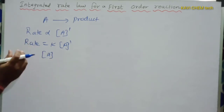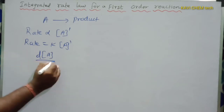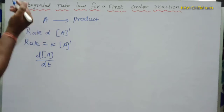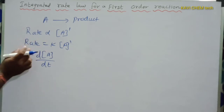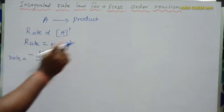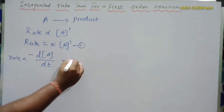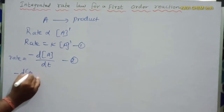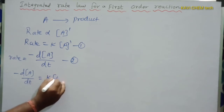Within square brackets we have the concentration of A. The concentration changes with respect to change in time, so rate is equal to minus d[A]/dt. There are two expressions for rate: rate equals K[A]¹, and rate equals minus d[A]/dt. Equating these two, we get minus d[A]/dt = K[A].